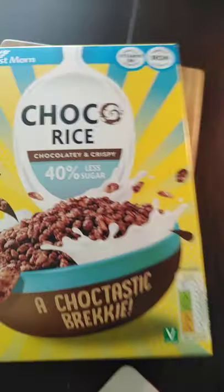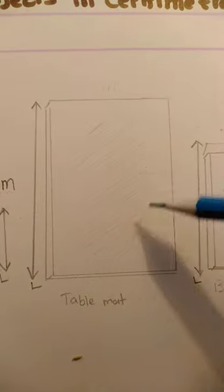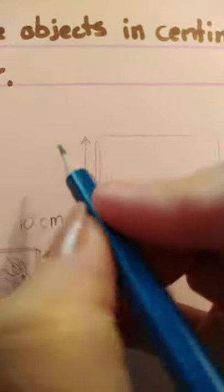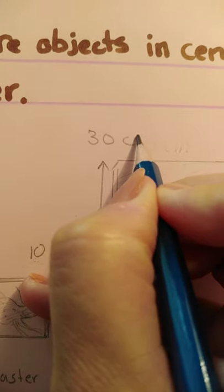Before measuring the last thing, I need to record my measurement. The table mat was — this is the length, and this is to indicate the length of the table mat. It is 30 centimeters.